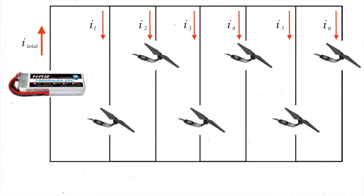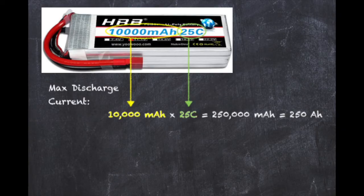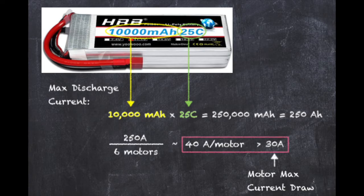Each motor and ESC is connected to the battery in parallel. Therefore, the current supplied by the battery is the sum of the currents running through each motor. This means that the discharge current of the LiPo battery should be large enough to handle the maximum current draw from all six motors.